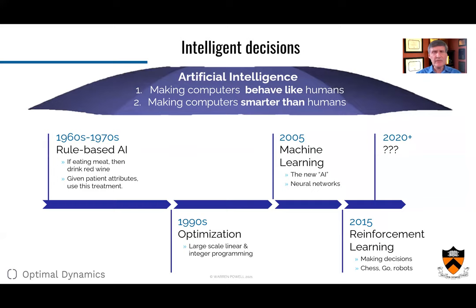I want to pause because there's a lot of confusion about artificial intelligence. If you go to somebody in computer science who works in AI and ask what is artificial intelligence, the first definition is making computers behave like humans. But recently we started to say we'd like to make computers smarter than humans. If you go back to the sixties and seventies, we had rule-based AI — if eating meat, then drink red wine. But when we got to more complex settings like health, things got complicated. In the 1990s, we went through the wave of optimization. People in operations research have been working on optimization since the 1950s, and it hit a big wave in the public's imagination — we were solving big problems, but people started to apply it to complex problems like supply chains, and suddenly that stopped working.